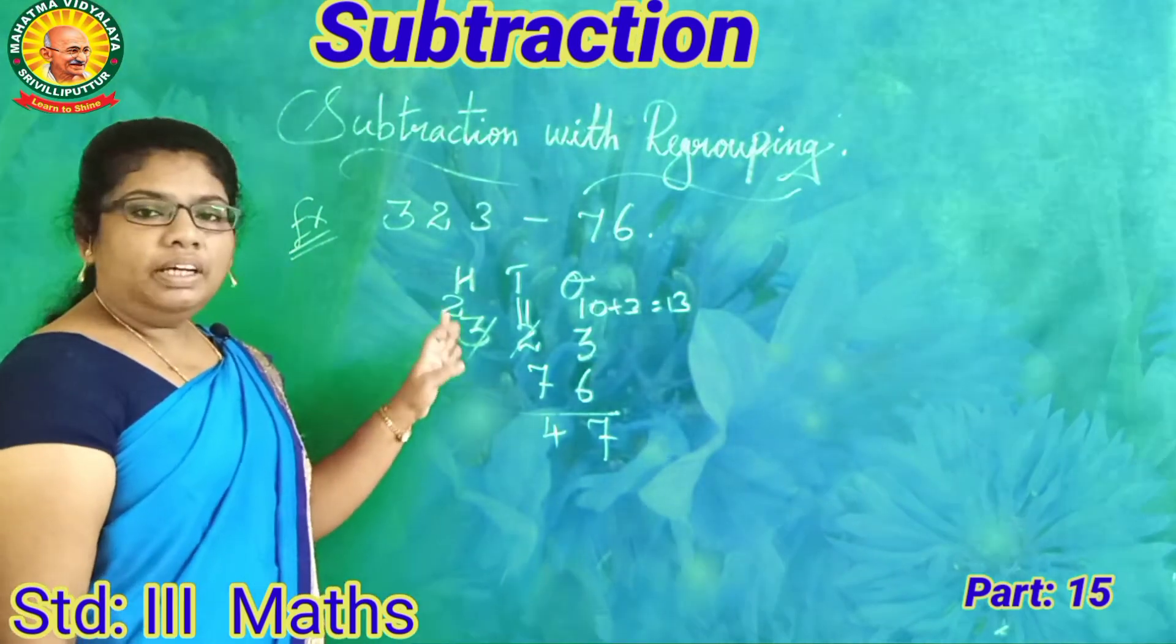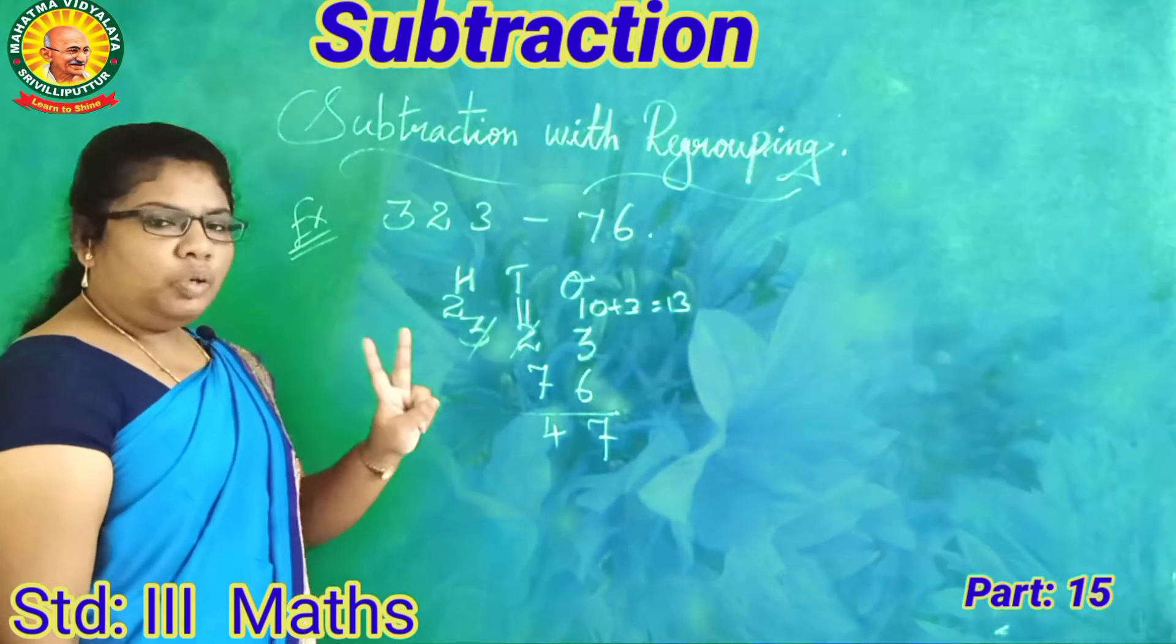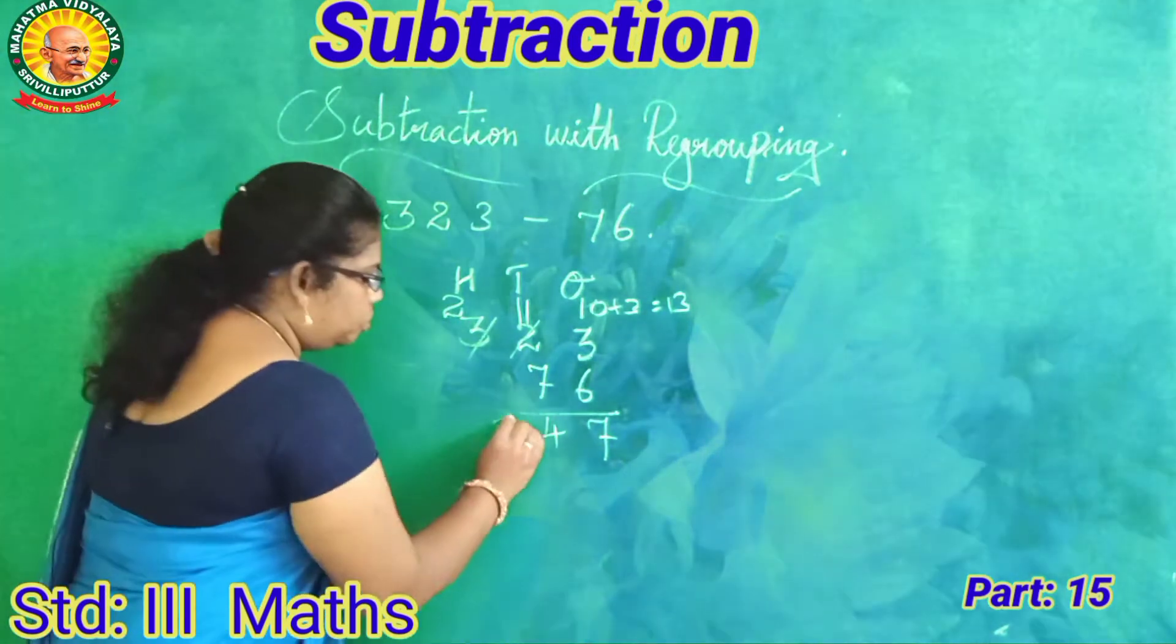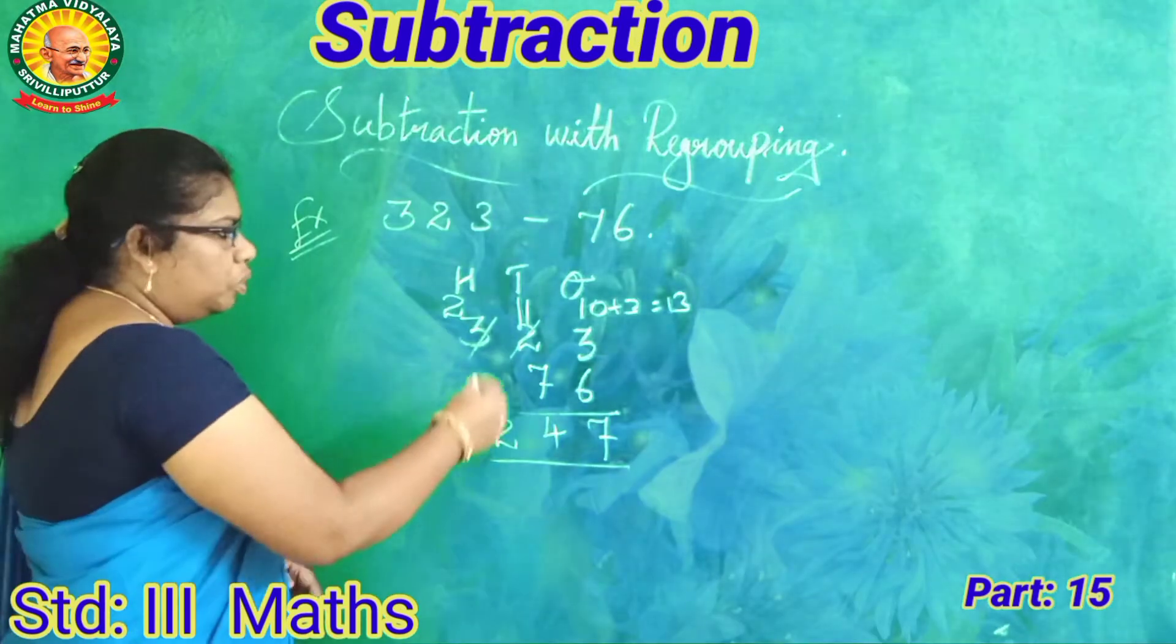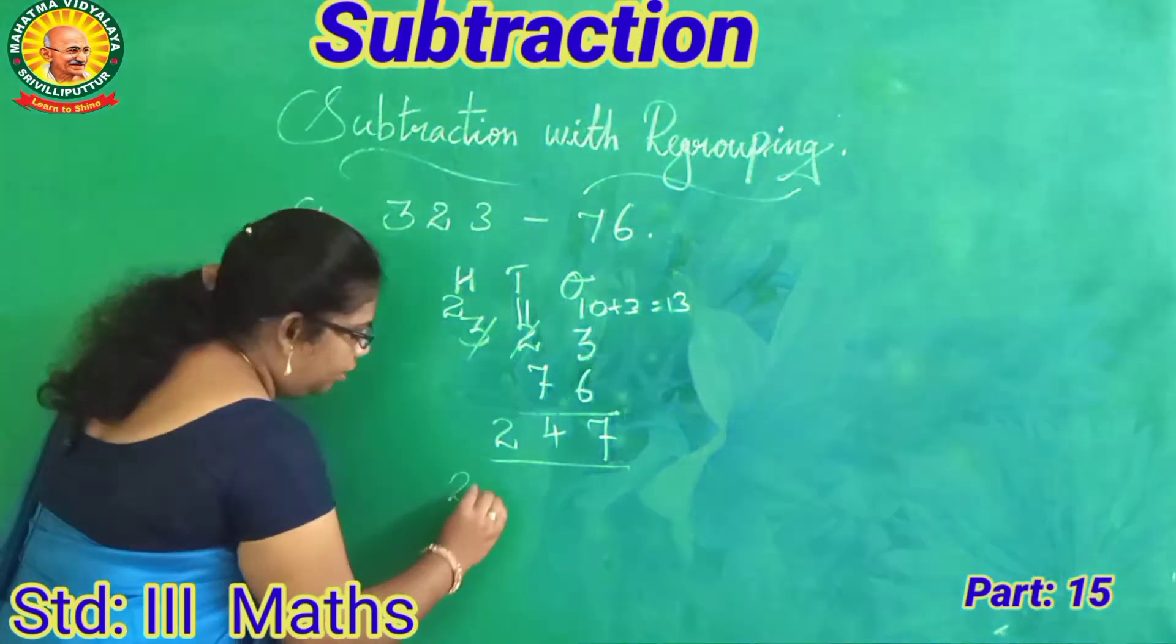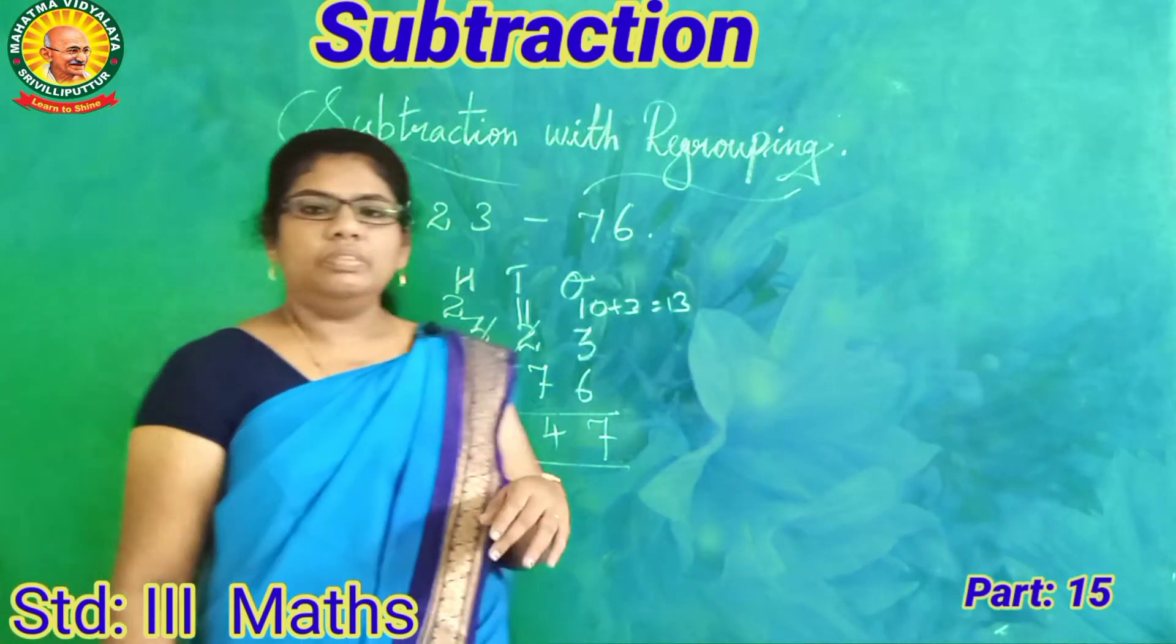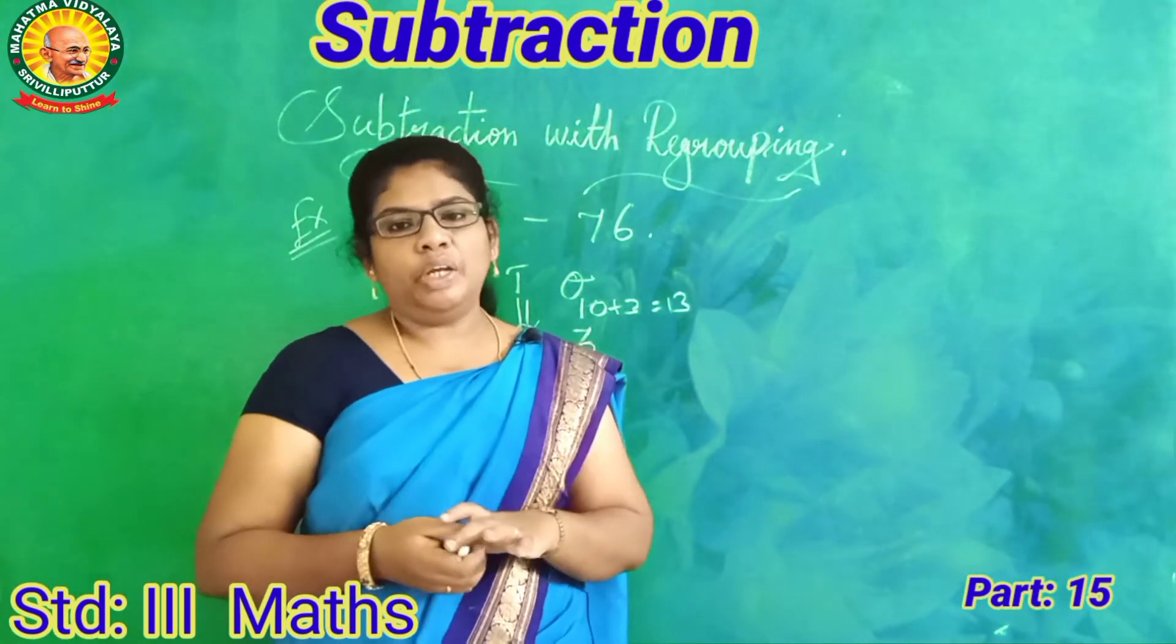Next, look at here. Hundreds. How many hundreds here? Two hundreds. Two hundreds only. So write two. So the difference between 323 minus 76 is 247. Do you understand how to do the subtraction with regrouping?